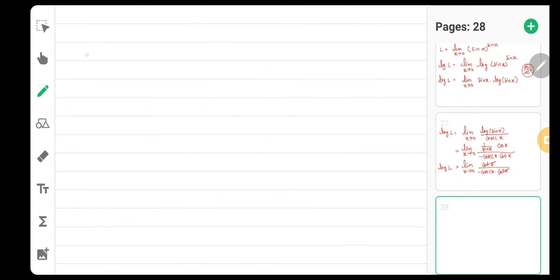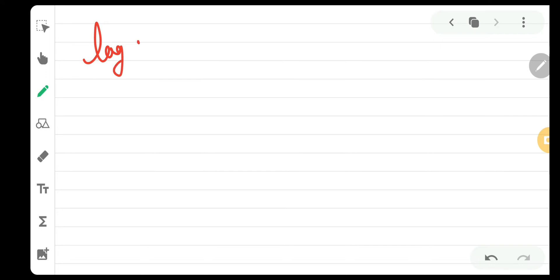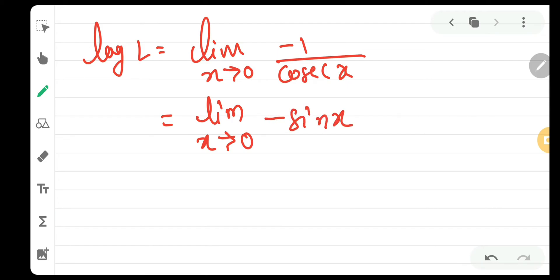As now we can see log l has been turned into limit x tends to 0 minus 1 upon cosec x. Now, there is nothing much that we can do. So, we have to literally put down the value of limit x tends to 0 minus sin x because 1 upon cosec x is nothing but sin x. And now this is turned into sin x upon 1. So, it's a solvable limit. And sin of 0 is 0. So, you will get log l as 0 because minus sin 0 is minus 0 which is 0.